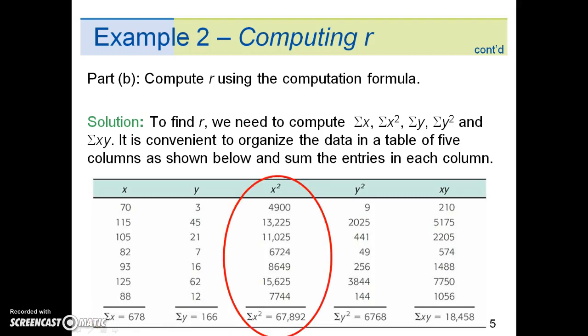The third column is x squared. Here, we simply take the individual x value and square it. For example, 70 squared, or 70 times 70, is 4900. Then, at the bottom of the column, we sum up all the x square values to get 67,892.